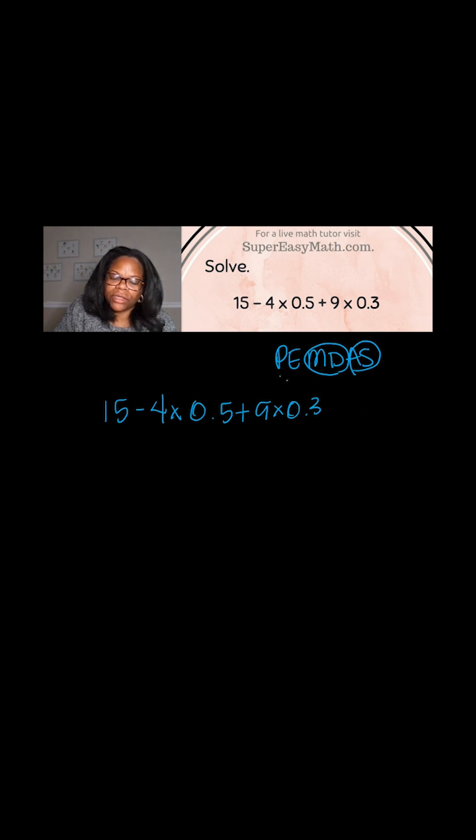So I'm going to start with P parentheses. Do I have any? No, I don't. E, exponents. Do I have any of those? I do not. Do I have multiplication or division? I do. And when I start from left to right, I can see that I have 4 times the 0.5.